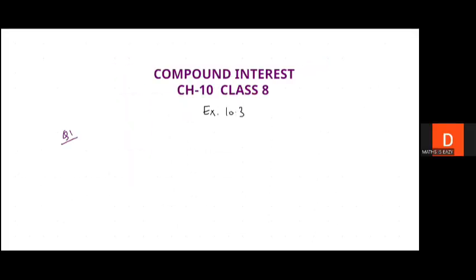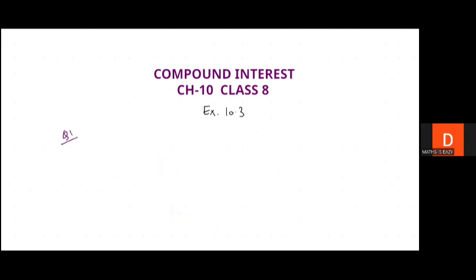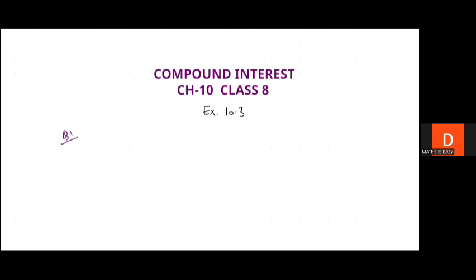Also surface area and volume, probability, and so on. Moreover, I have solved many chapters of Class 7 Maths book of the same publication. The chapter names are integers, fractions, decimals, rational numbers, linear equations, triangle and its properties, lines and angles. Go to the playlist and check all the solution videos.